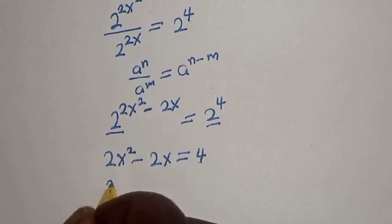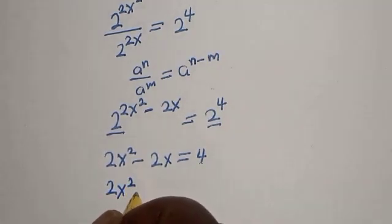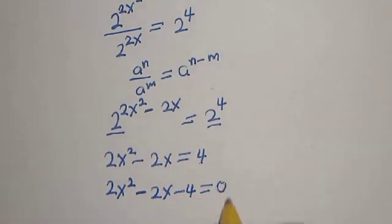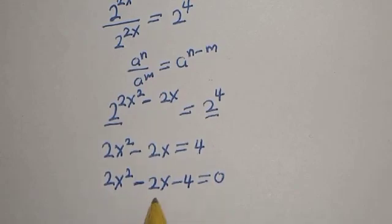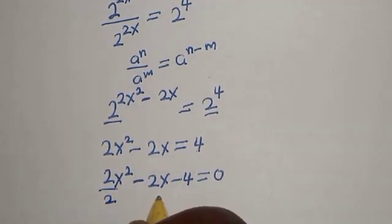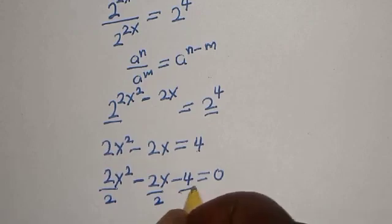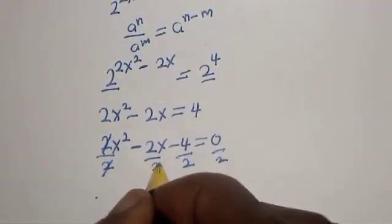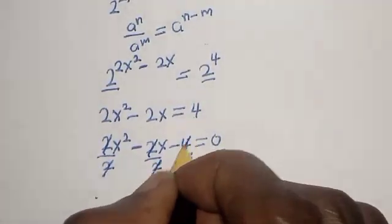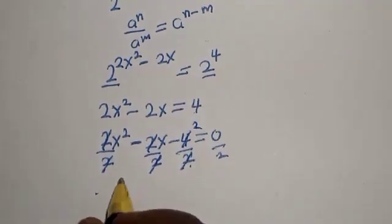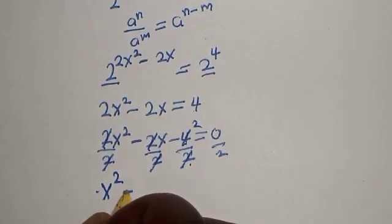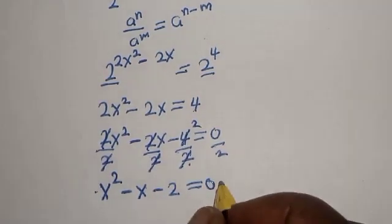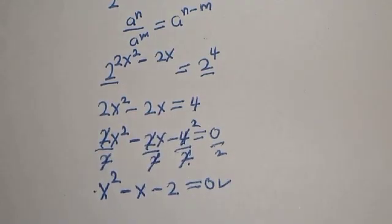Bringing 4 to the left side: 2s squared minus 2s minus 4 is equal to 0. We can simplify by dividing the entire equation by 2, giving us s squared minus s minus 2 is equal to 0. This is a quadratic equation.